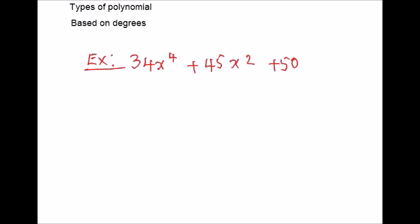Let me show you an example. In this polynomial, the polynomial is arranged in descending order and the term with the highest exponent is 4, the first term. So the degree of the polynomial is 4. The highest exponent will be considered as the degree of the polynomial.